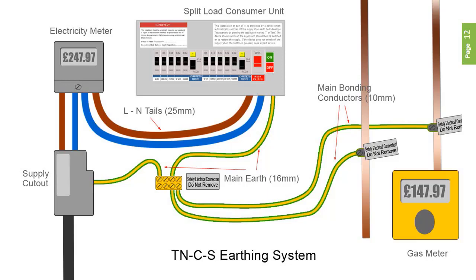Almost all new supplies for dwellings will be from a PME distribution system. It's easy to spot, as the earth is provided from the distributor's fuse cutout and can be seen coming out of the side, where it is connected to the incoming PEN or Protective Earth Neutral Conductor. The maximum earth fault loop impedance for a TN-CS system is 0.35 ohms.